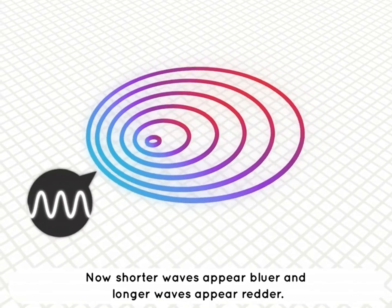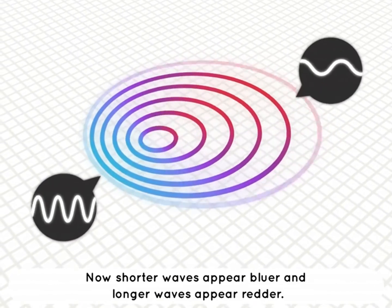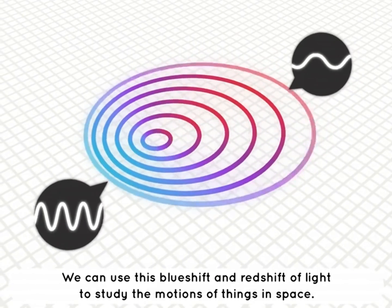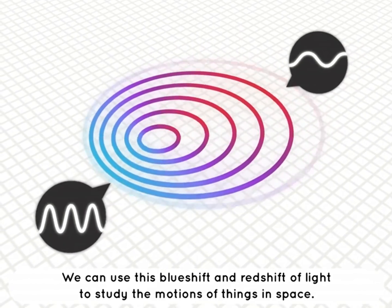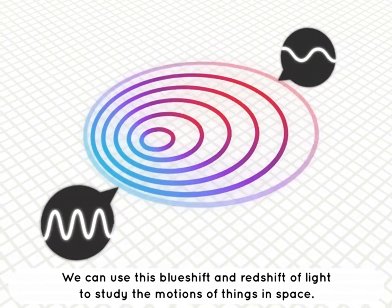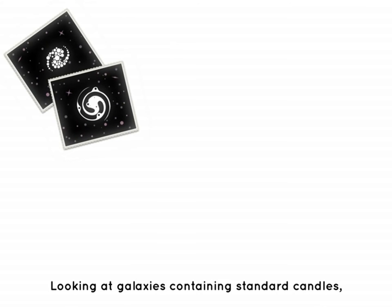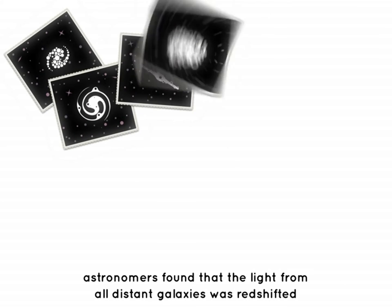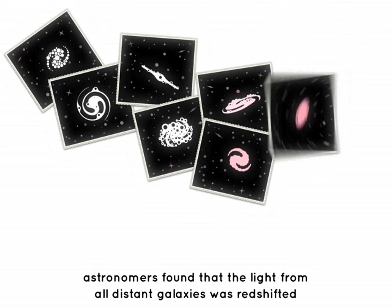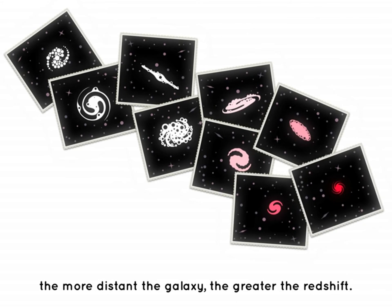Shorter waves appear bluer and longer waves appear redder. We can use this blue shift and red shift of light to study the motions of things in space. Looking at galaxies containing standard candles, astronomers found that the light from all distant galaxies was redshifted — and the more distant the galaxy, the greater the redshift.